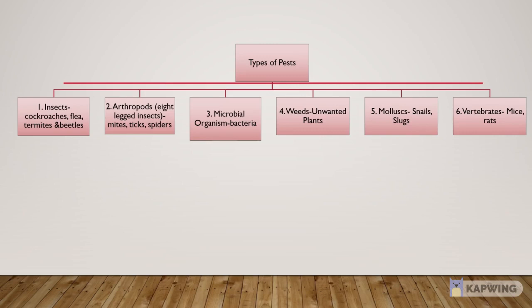Number 3: Microbial organisms, which include bacteria. Number 4: Weeds. These are unwanted plants which we have to remove from our fields and gardens. Number 5: Molluscs. It includes snails and slugs. Number 6: Vertebrates, which include mice and rats.